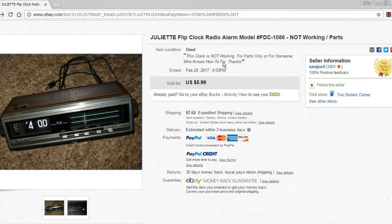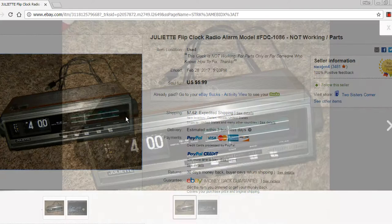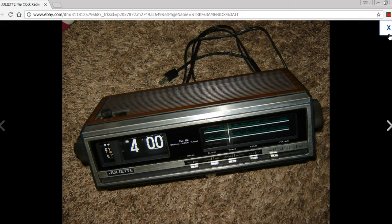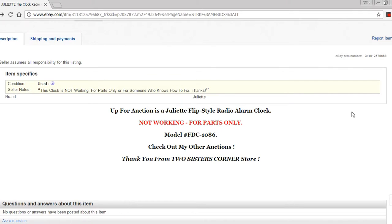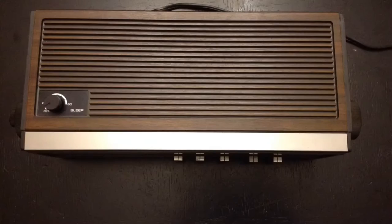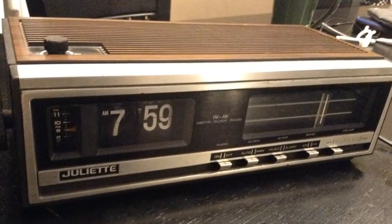Welcome fans of flip clocks. While on eBay, I was buying a Juliet flip clock that was $5.99. I buy it now and even with shipping it was only $13.61. I thought, well, I've never done a Juliet before. So what we've got is a model FDC1086 that's not working. The clock's not working, the radio's not working.